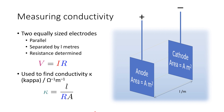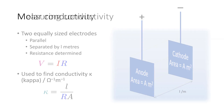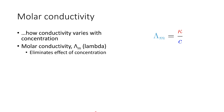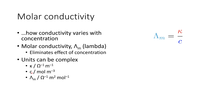Solution conductivity only relates to that particular solution measured at that time. A more useful measurement is the molar conductivity — how the conductivity of a solution varies with its concentration. This is known as the molar conductivity and carries the symbol lambda (Λ_M). It eliminates the effect of concentration, giving the molar conductivity for any solution of a particular analyte. The units can be complex: kappa is in per ohm per meter, concentration C is in moles per cubic meter, while limiting molar conductivity is in ohms per square meter per mole.